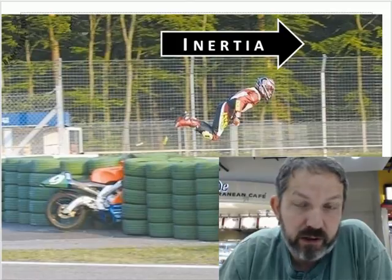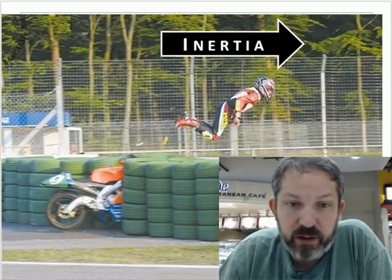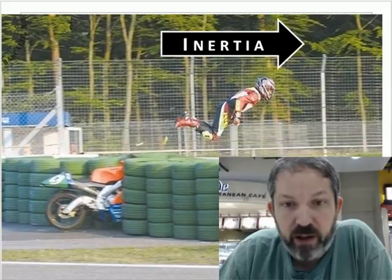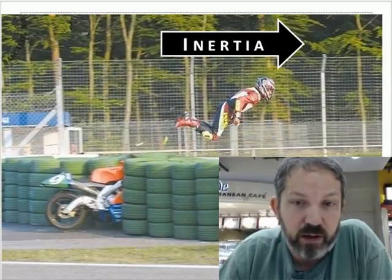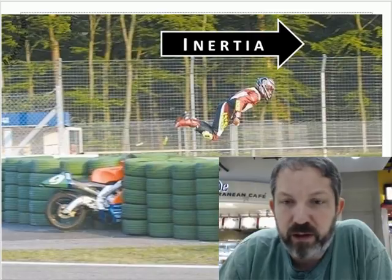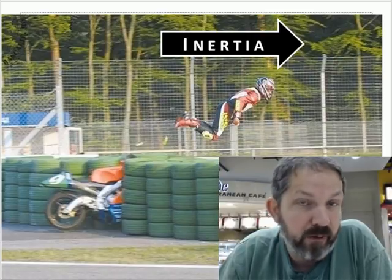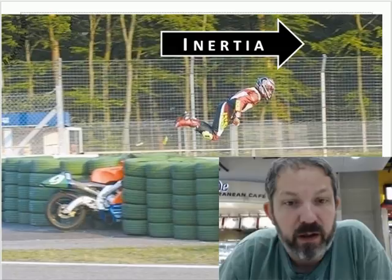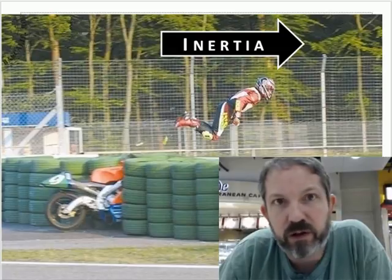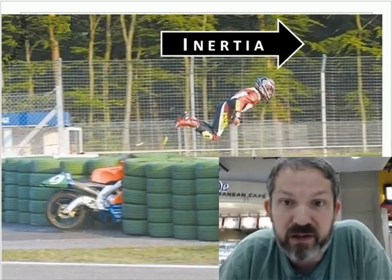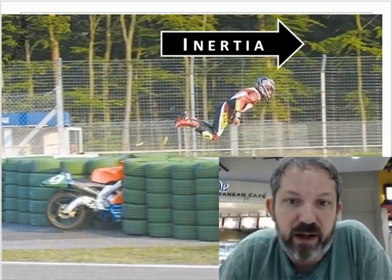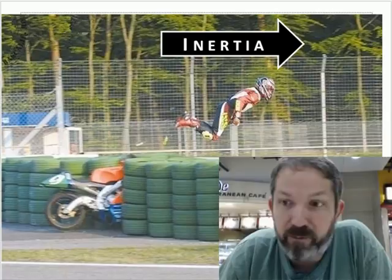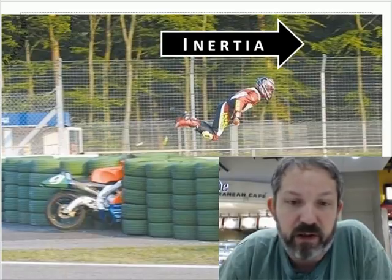Here's another demonstration of inertia. This volunteer crashed his motorcycle into some tires, which stopped the motorcycle, but he was moving with the motorcycle and has a tendency to continue in motion — in this case, flying through the air. If it weren't for gravity, he'd continue going indefinitely. If this were in space, he would just keep traveling at that speed. But here, gravity pulls him down quickly, and then friction is enough to overcome his inertia and stop him.